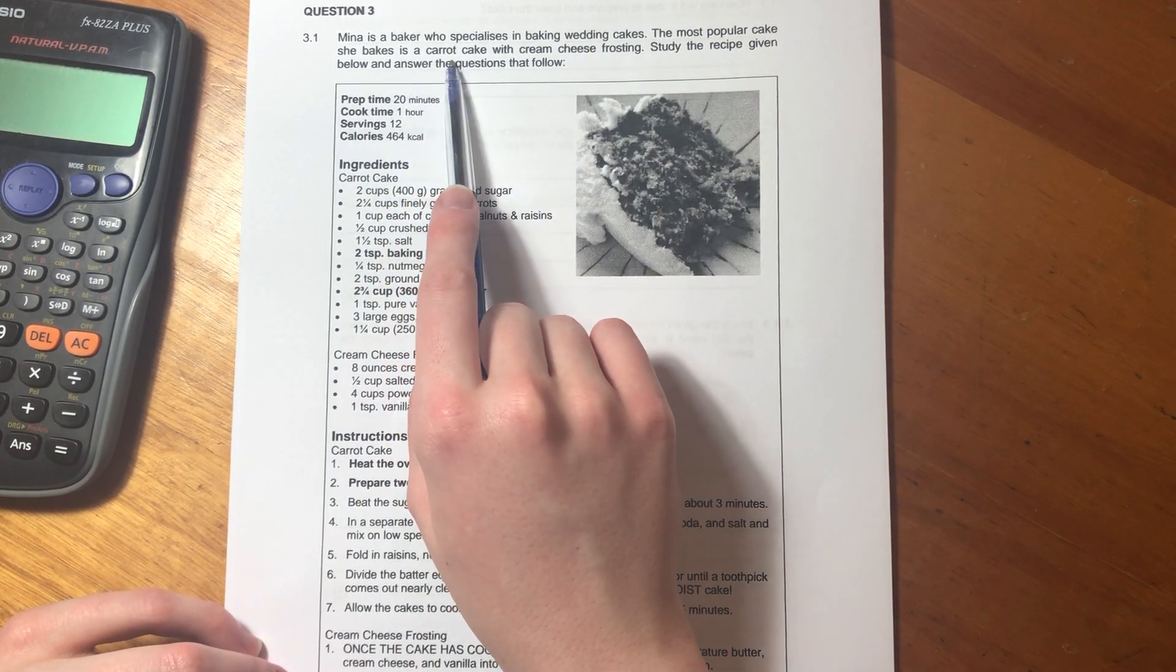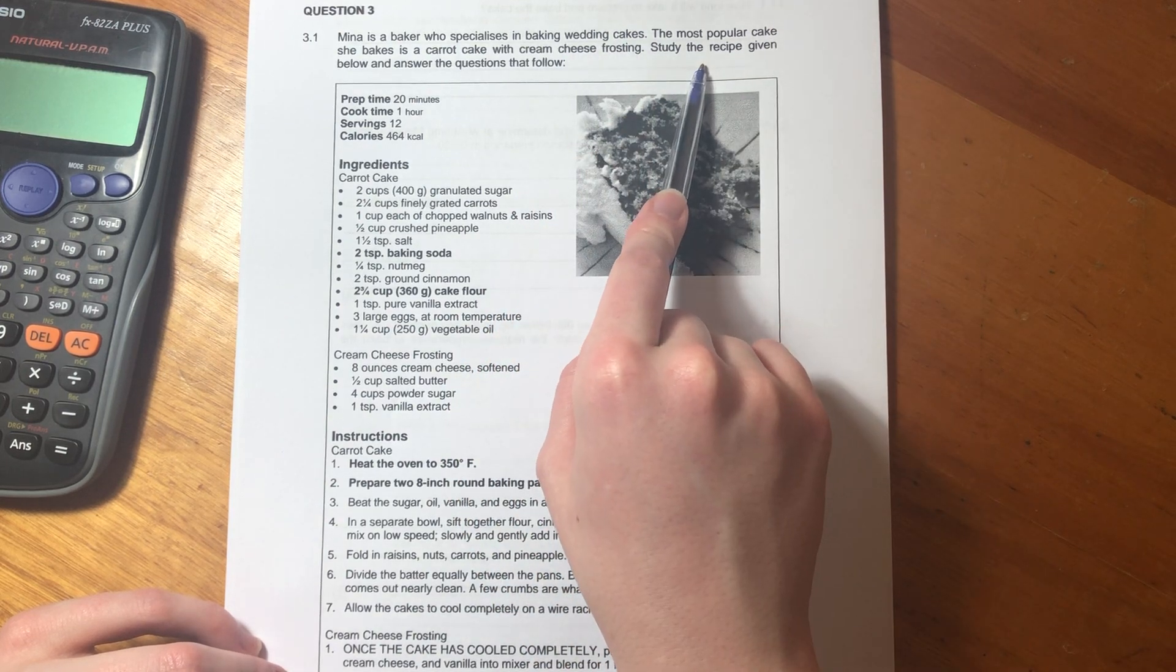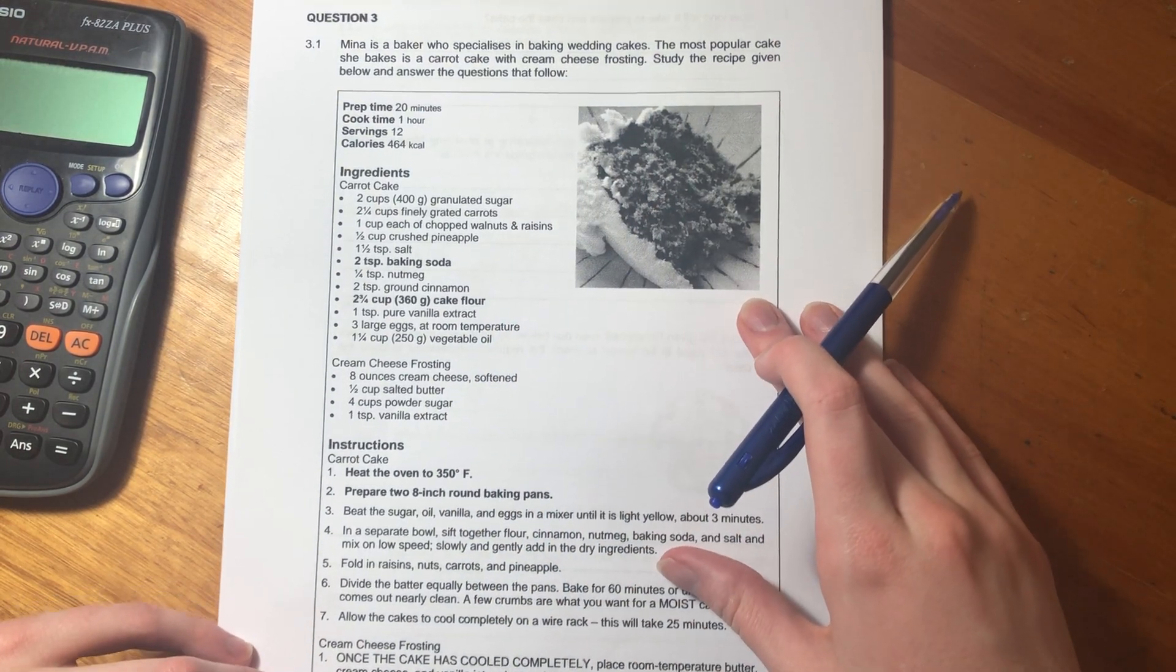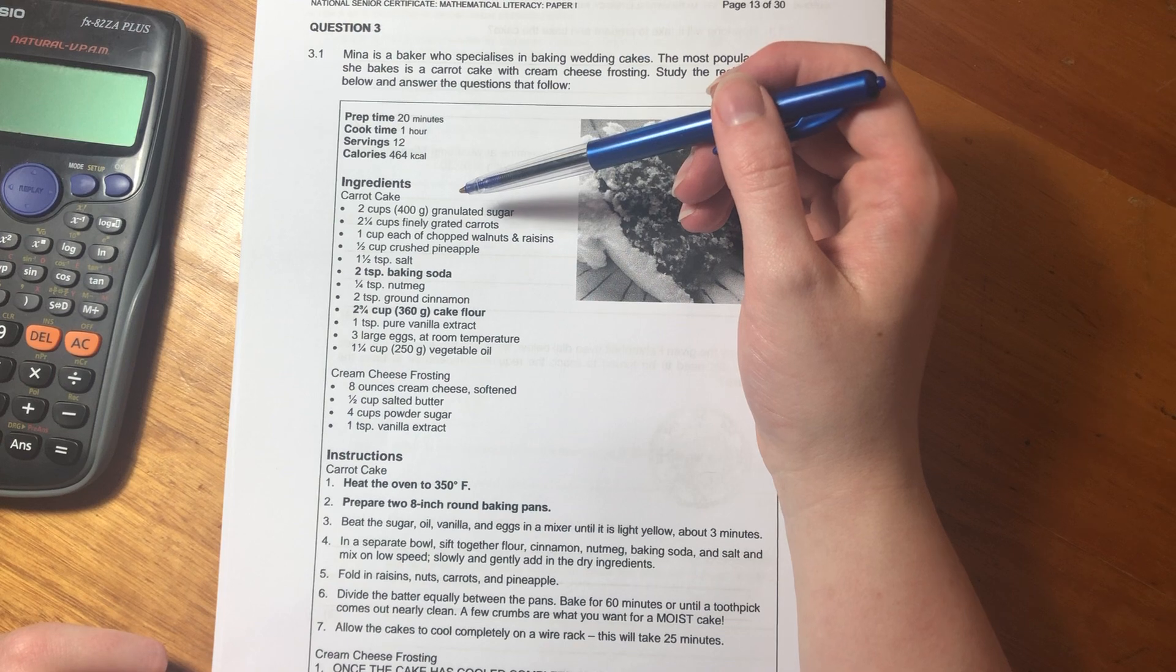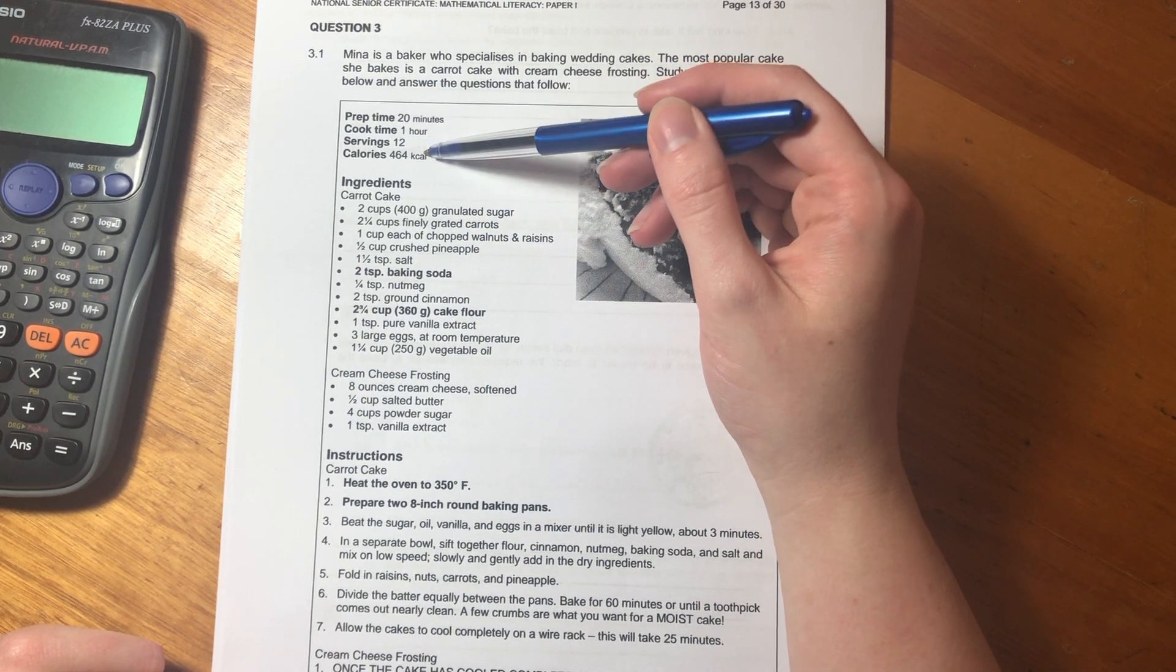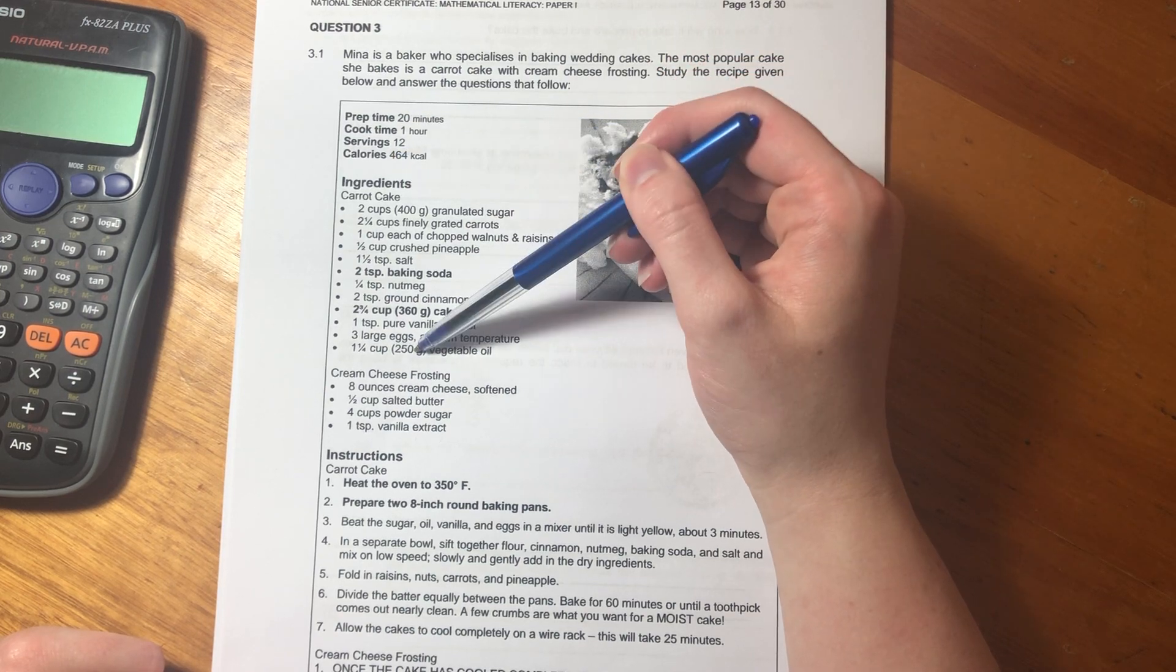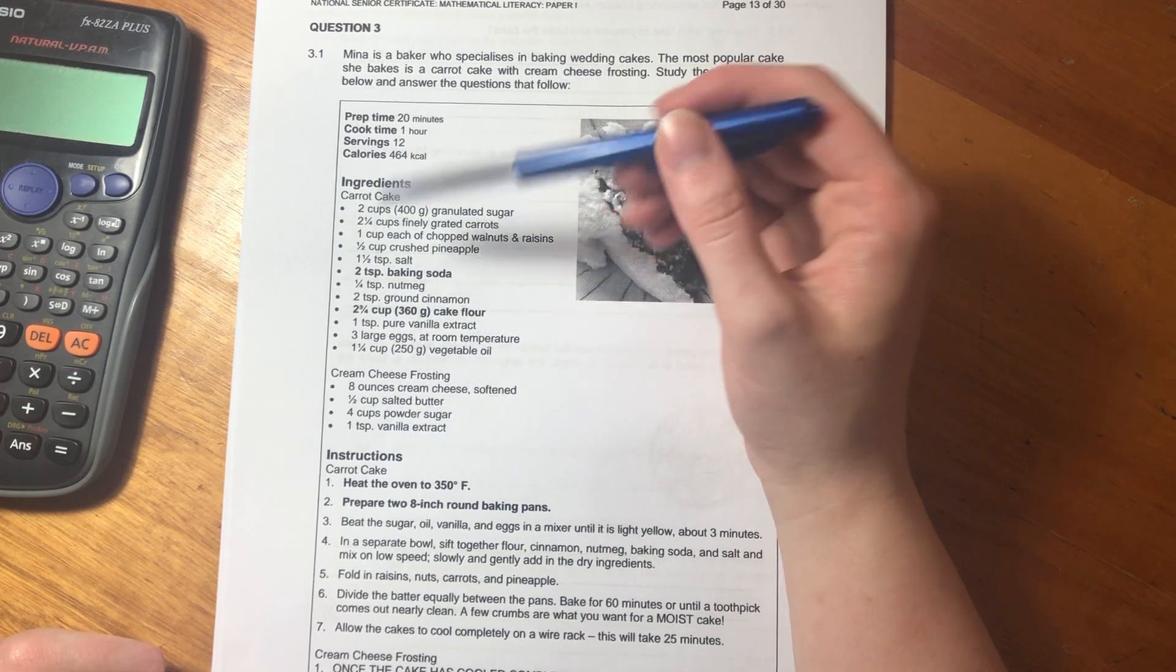The most popular cake she bakes is a carrot cake with cream cheese frosting. Study the recipe given below and answer the questions that follow. Just checking you can see what I'm seeing. We see prep time, cook time, serving time, calories worth every single calorie.